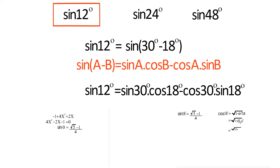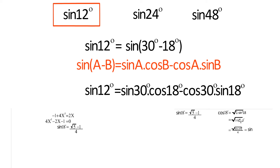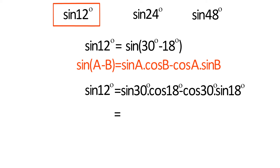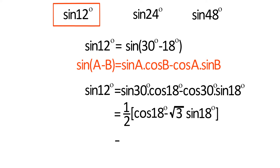We found the value of sin 18 degrees and cos 18 degrees in our previous video. If you want to watch that video, check the description box below. So sin 12 degrees equals (1/2) cos 18 degrees minus √3 times sin 18 degrees, which equals (1/2) times (√(10 + 2√5))/4 minus √3 times (√5 minus 1)/4.